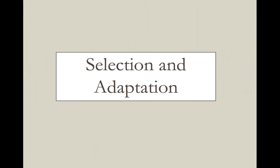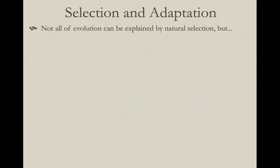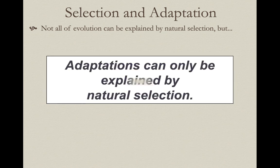Let's first review the link between natural selection and adaptation, then we're going to move into talking about how we can form hypotheses of adaptive evolution and test them scientifically. We've talked about the various mechanisms of evolution, and not all of evolution can be explained by natural selection — there are other mechanisms involved. But adaptations can only be explained by natural selection. There's a clear link between these.